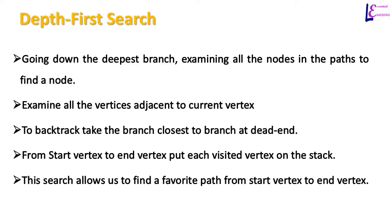There are many algorithms to traverse nodes in a graph and find a particular node; we will discuss three of them. These same algorithms can be applied to trees and are easier to understand in that context, so for graphs we will cover only the theoretical concepts. In depth-first search, we go down the deepest branch and examine all nodes in the path to find a matching node. All vertices adjacent to the current vertex at all levels are examined. A stack data structure is used to store the most recently visited vertex. Depth-first search is mainly used to find a favorable path from a start vertex to an end vertex.